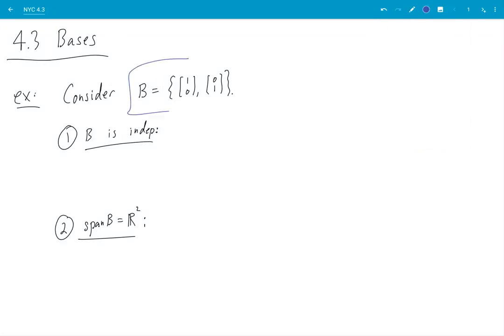Let's look at this most basic example in R². Maybe I want to say V is R² in this case. So this set B is independent. I know that because the matrix [1,0; 0,1] has a pivot for every column.